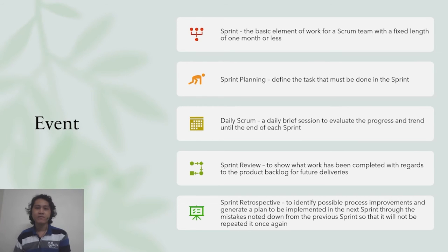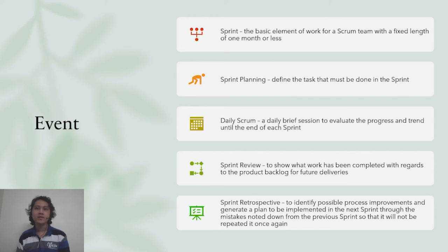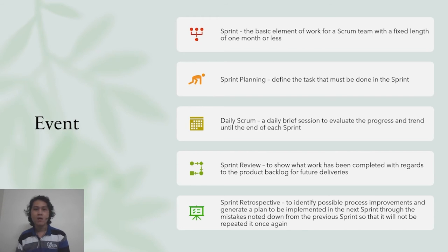There are five events in Scrum: sprint, the basic work element with a fixed length of one month or less; sprint planning, where the Scrum team defines tasks for the sprint; daily Scrum, a daily brief session to evaluate progress until the end of each sprint; sprint review, to show completed work regarding the product backlog for future deliveries; and sprint retrospective, to identify process improvements and generate a plan for the next sprint based on mistakes noted from the previous sprint.